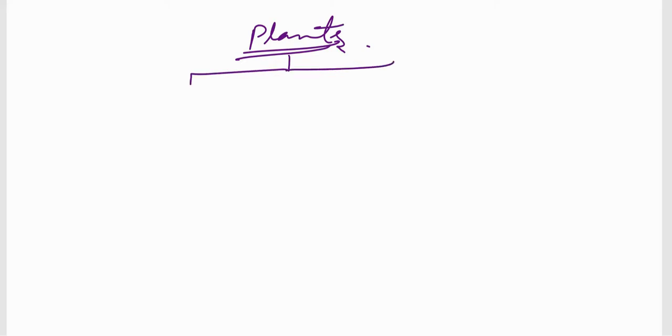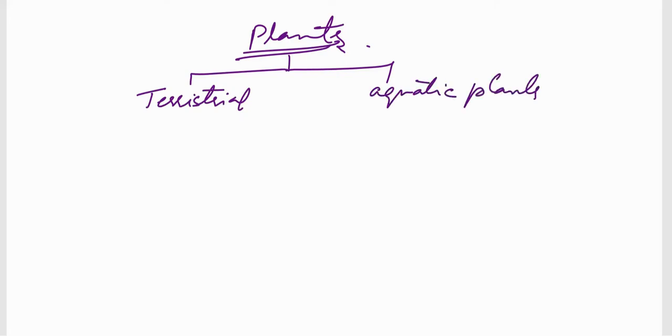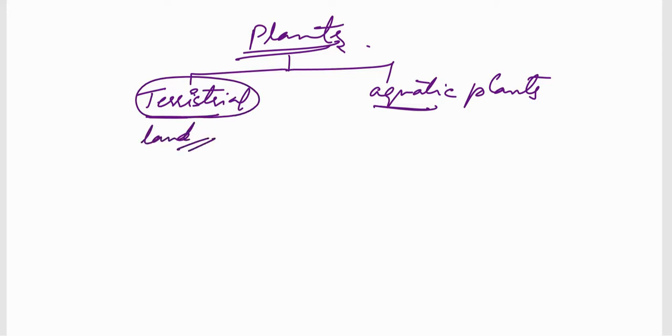We are coming up with a lesson called Plants. We know that there is very vast diversity among living forms found on earth. Plants are basically classified into two: one is terrestrial plants and another one is aquatic plants. Terrestrial means land-based — plants that are present on land. Aquatic means present in water.